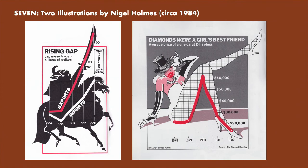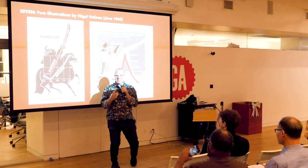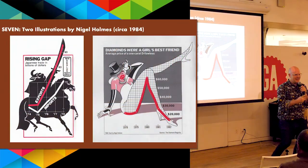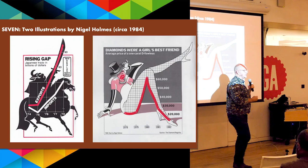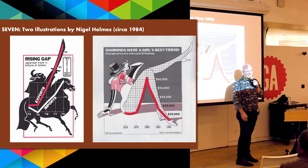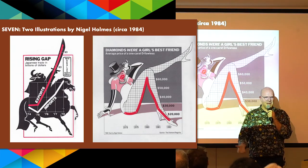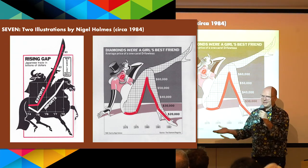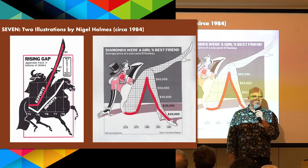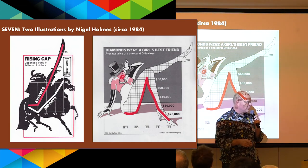Tufte hated Nigel Holmes. He hated him so much he named a whole thing about it — he coined the data-to-ink ratio and called it chart junk. But Nigel was an information designer for Time Magazine. He wasn't talking to businessmen. He certainly wasn't talking to NASA scientists. He was making complex statistical data interesting for whoever just happened to open up a magazine. I wouldn't want to call it lowest common denominator, but it was most definitely marketing.